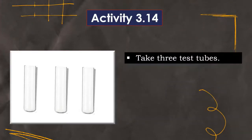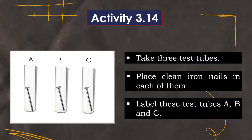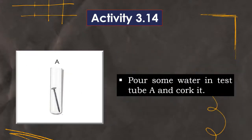Let us perform this activity. The first step is take three test tubes, place iron nails in each of them, and label these test tubes A, B, and C. Next, pour some water in test tube A and cork it.